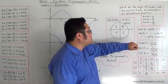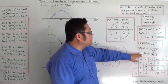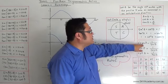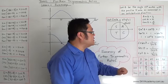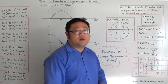we looked at reciprocal ratios. We worked out that cosec theta is equal to 1 on sin, sec theta is equal to 1 on cos, cotangent theta is equal to 1 on tan.